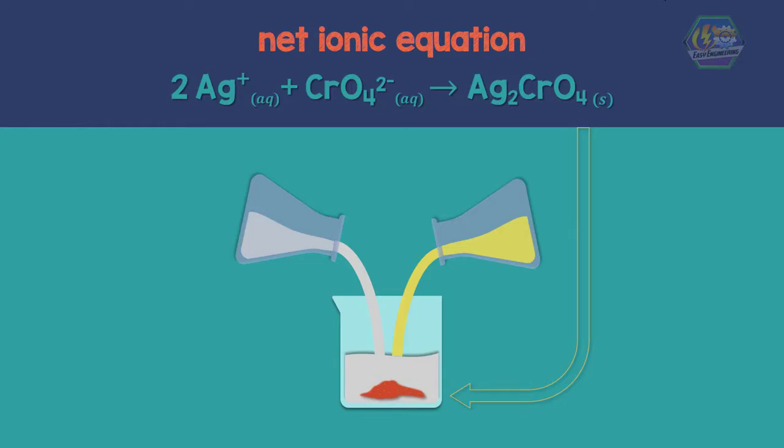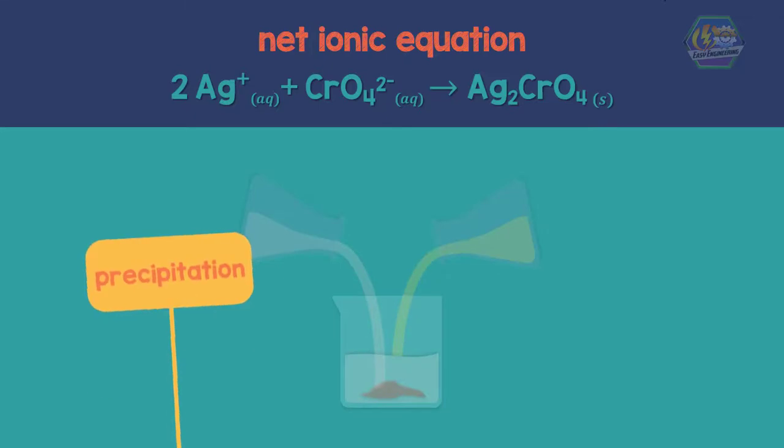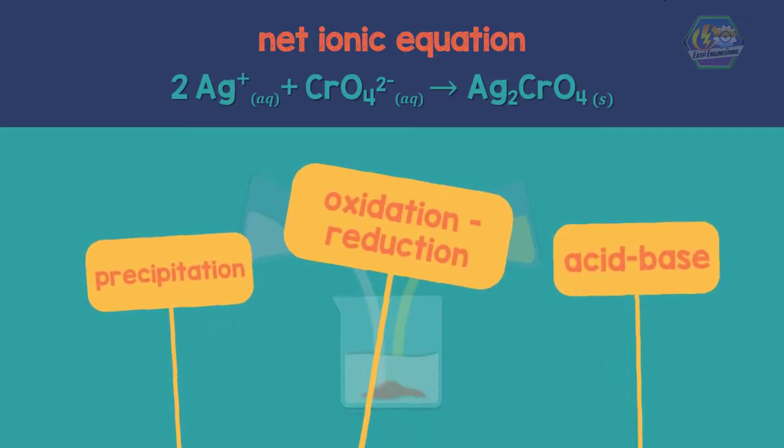Knowing these things, we are now ready for the important classes of chemical reactions. These are precipitation, acid-base, and oxidation-reduction.